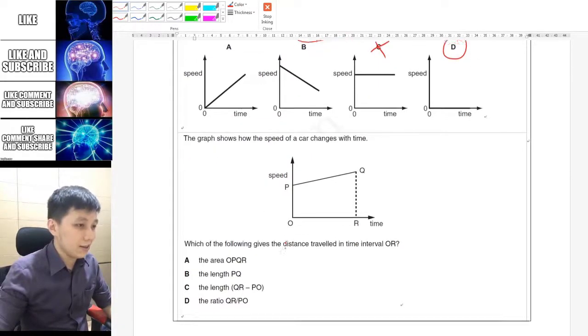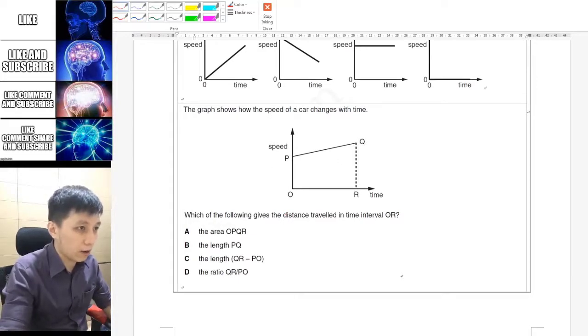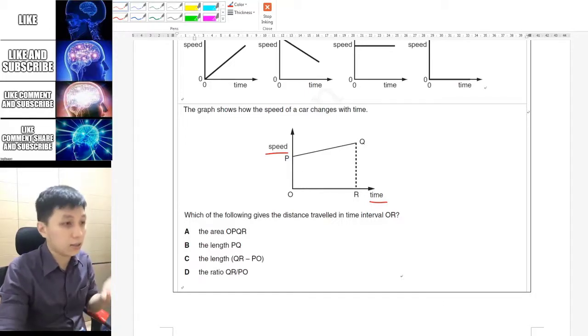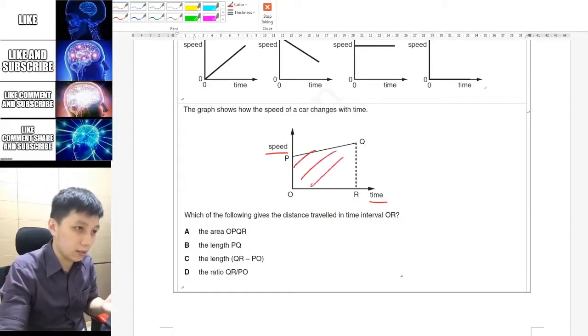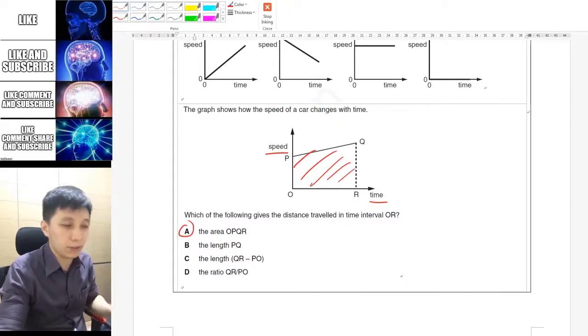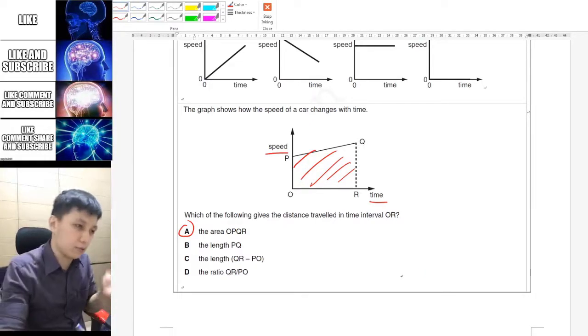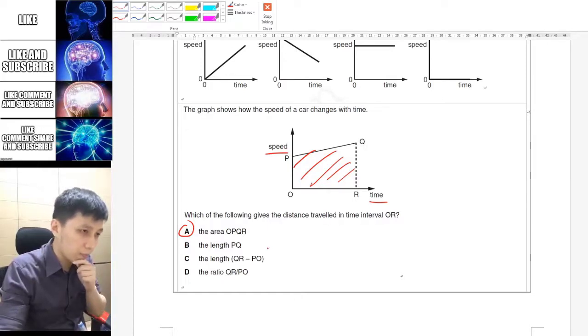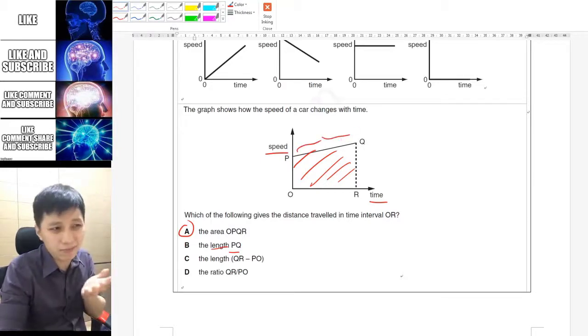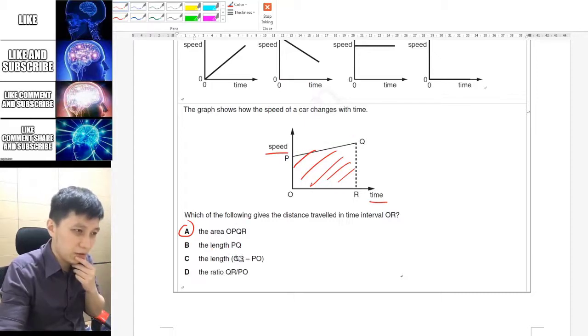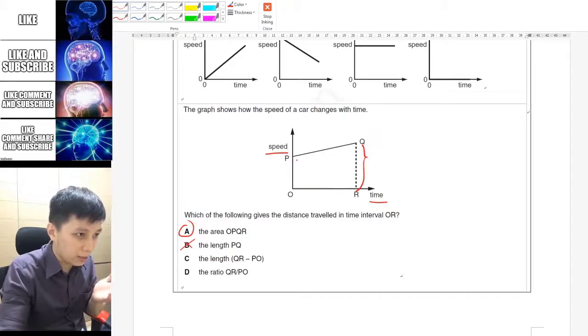Next, when you have a graph like this, this is a speed-time graph. It asks you which of the following gives the distance traveled between O and R. Like we said, that would be the area under the line, so A will be the answer. In physics I always encourage people to think about other options in MC as well. For P and Q, the length actually has no physical meaning, so for sure that's not B.